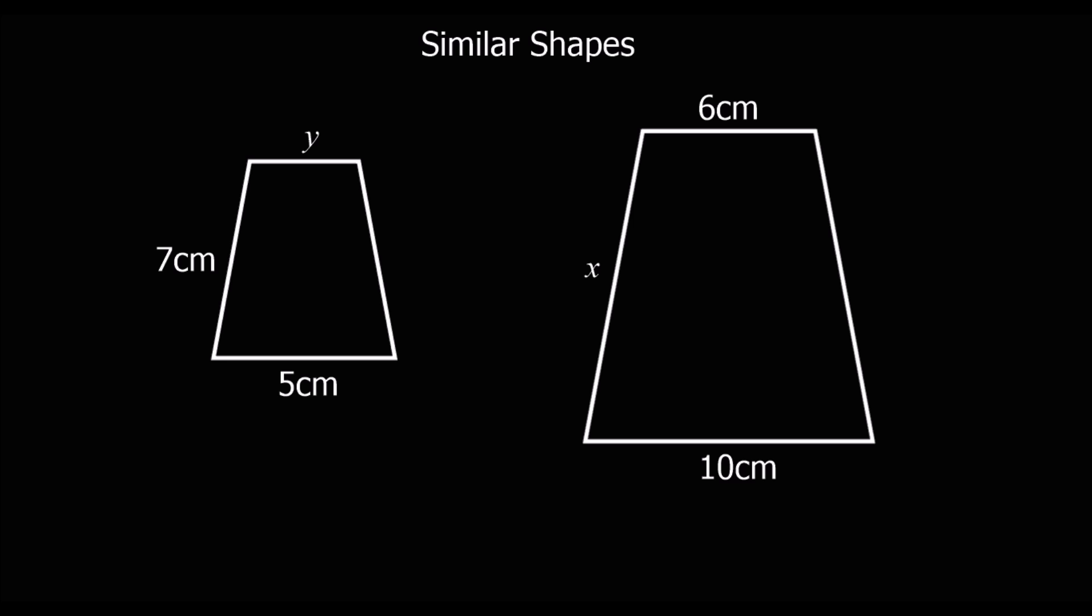Here we've got two similar shapes. Similar shapes are two shapes with the same angles, but they're a different size. So one is an enlargement of the other one. Whenever we've got similar shapes, what we need to do is find the scale factor. So what do you have to multiply one shape by, or multiply the lengths by in one shape, to get the lengths on the other shape?